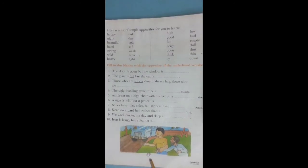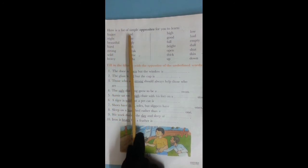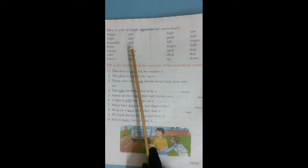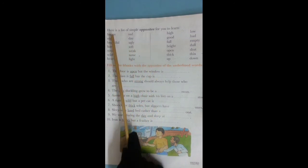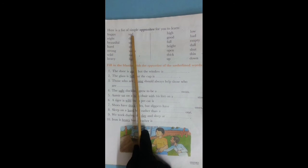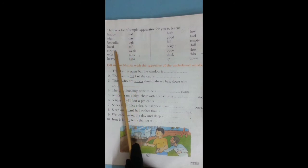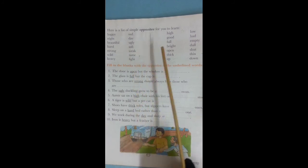Now children, open page number 59. Here is a list of simple opposites for you to learn. You have to learn them and also note them in your notebook. Happy, sad. Night, day. Beautiful, ugly. Hard, soft. Strong, weak. Wild, tame. Heavy, light.